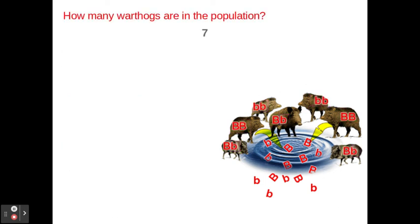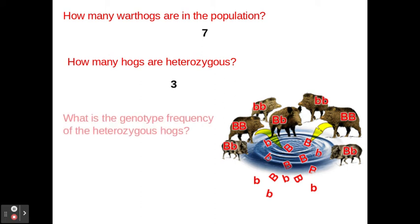Let's do one more example. Same population of seven warthogs, but now we're going to calculate a genotype frequency. How many of these warthogs are heterozygous? Heterozygous means big B, little b — and there are three of them in the image. What's the genotype frequency of the heterozygous hogs? We take the three heterozygous hogs divided by the total of seven, and we get 0.43 — so 43% of the warthogs have the heterozygous genotype. The previous example was an allele frequency question; this one is a genotype frequency question.